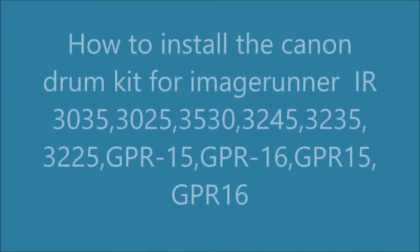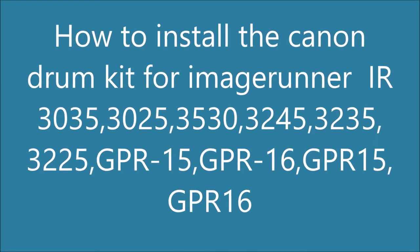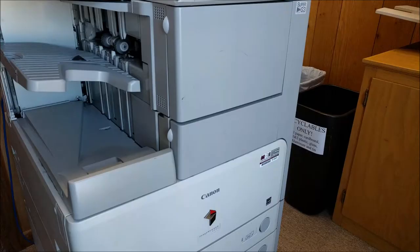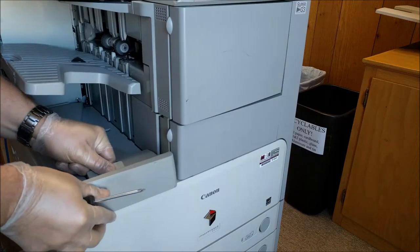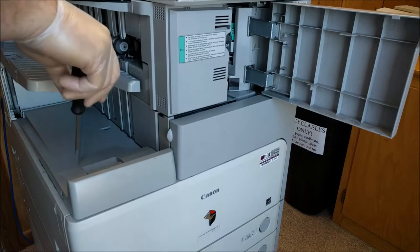Welcome to another one of my how-to videos. Here is the Canon drum, fits many different models. I have a 3225 image runner. Start off by removing this little plastic tab right there from down below, and then there's a screw there.